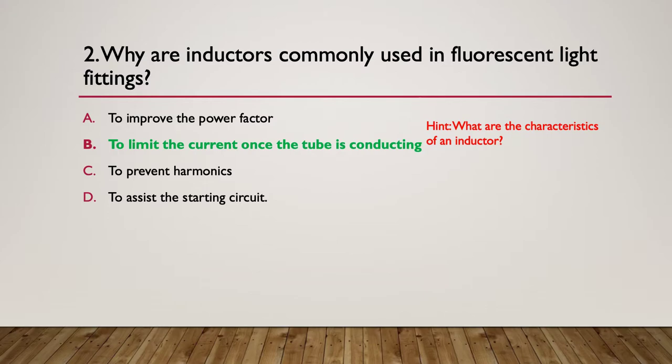It's used to limit the current once the tube is conducting. That's what it's very good at. Until the tube strikes, no current, therefore no restriction of current through the inductor. But once the tube conducts, the impedance of the gas in the tube goes from several megaohms down to a fraction of an ohm. Therefore, the inductor then limits the current.